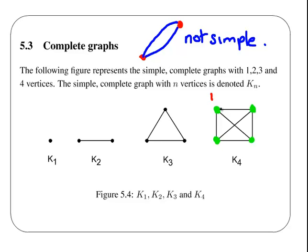For example, this is vertex 1. Suppose it is connected to vertex 2 by that edge, vertex 3 by that edge, and vertex 4 by that edge — and likewise for vertices 2, 3, and 4. So that is the idea of a complete graph.